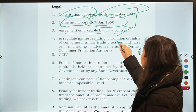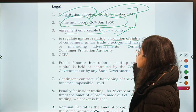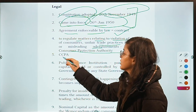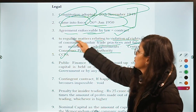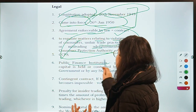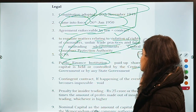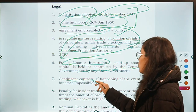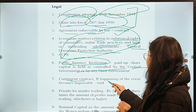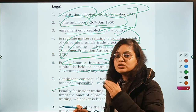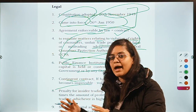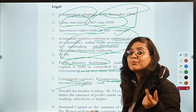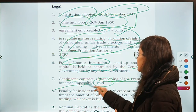To regulate matters relating to violation of rights of consumers, unfair trade practices and false misleading advertisements, who is the authority? It is the Central Consumer Protection Authority, CCPA. Next question: who holds the capital of a public finance institution? The answer is the Central or State government — they can both combinedly or partly hold capital. Then: what happens in a contingent contract where the happening of the event becomes impossible? That contingent contract will be considered void.